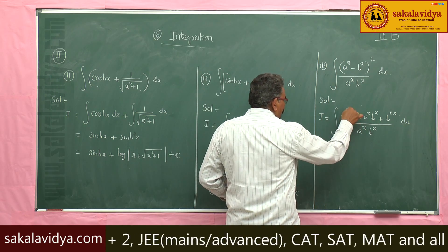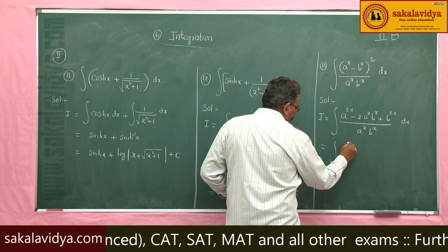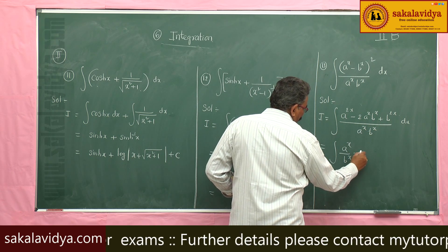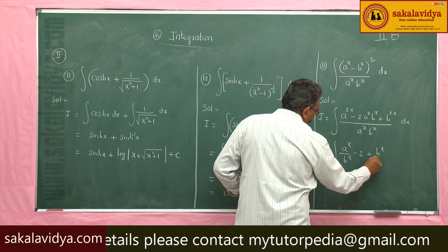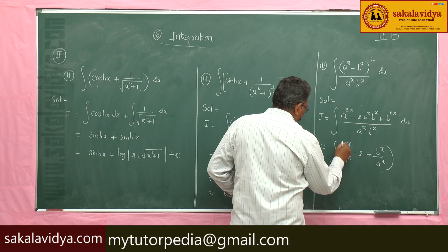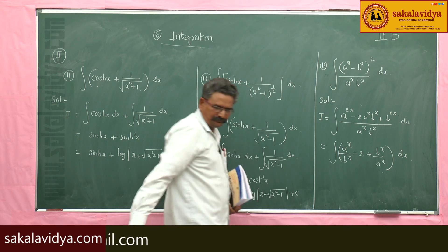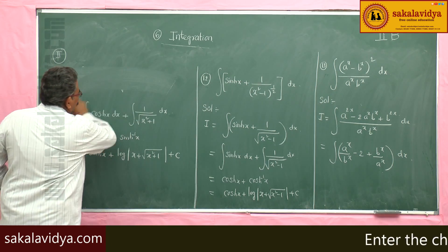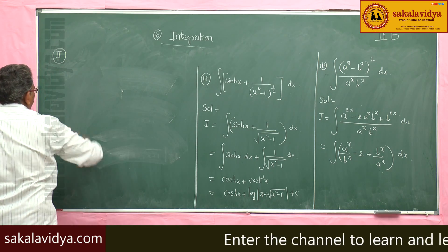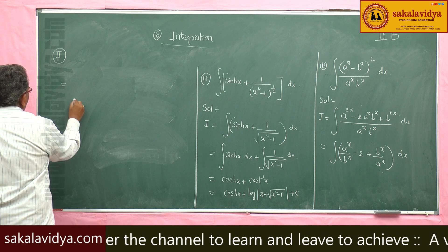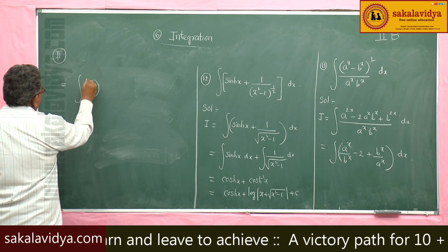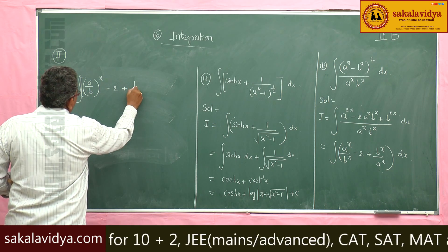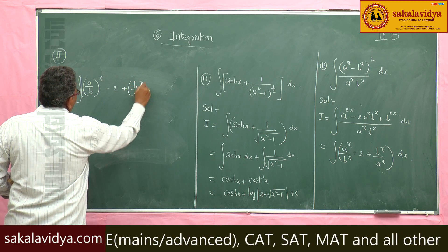Separating the terms: a²ˣ / (aˣ·bˣ) gives aˣ/bˣ, and the middle term cancels to give −2, while b²ˣ / (aˣ·bˣ) gives bˣ/aˣ. So we can write (a/b)ˣ − 2 + (b/a)ˣ dx.